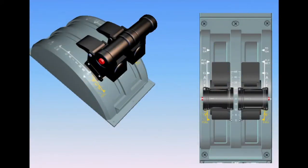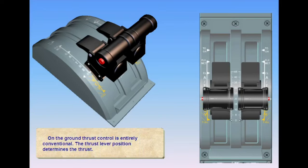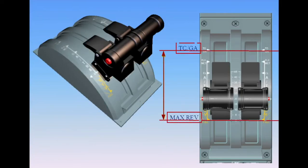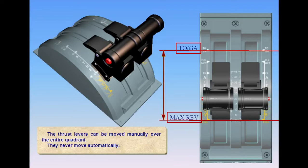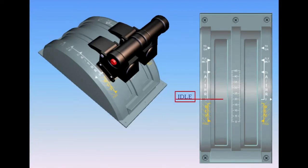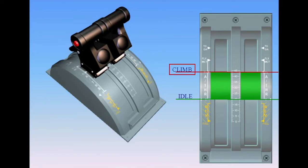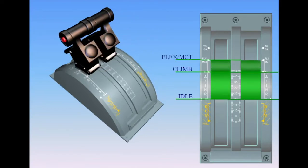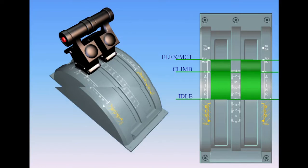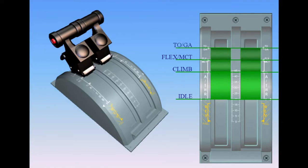On the ground, thrust control is entirely conventional — the thrust lever position determines the thrust. The thrust levers can be moved manually over the entire quadrant and never move automatically. There are six detents on the quadrant: E-idle, idle, climb for maximum climb thrust, flex/max continuous thrust — one detent serving two functions where flex is used for reduced thrust at takeoff and MCT max continuous thrust is used for single engine operations — and TOGA for maximum takeoff or go-around thrust.